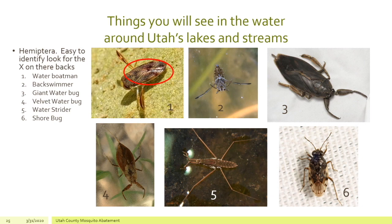The next group is the Hemiptera. These are easy to identify — if you look on their backs you'll see a kind of an X. I've circled that so you can see it on number one, which is a water boatman. Number two is a back swimmer. Number three is what we call a giant water bug, and though the picture is deceptive, it is really quite large — maybe three or four times bigger than the first two. Number four is a velvet water bug. Number five, water striders, many of you have seen moving along the top of the water in summer. And then a shore bug. All of these are Hemiptera because they have that nice X on their back.